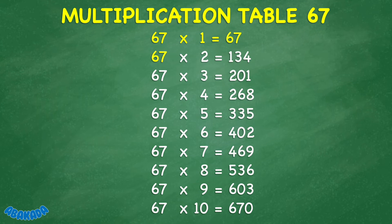67 times 2 equals 134. 67 times 3 equals 201. 67 times 4 equals 268. 67 times 5 equals 335. 67 times 6 equals 402.